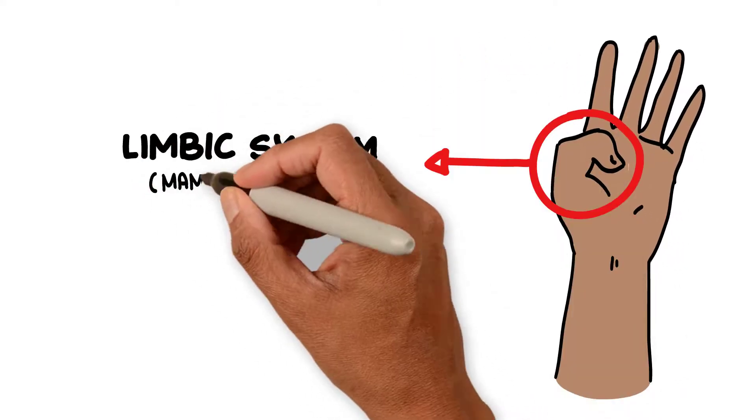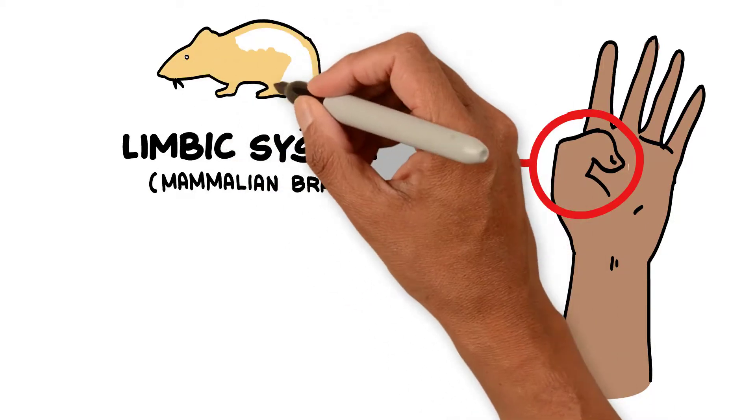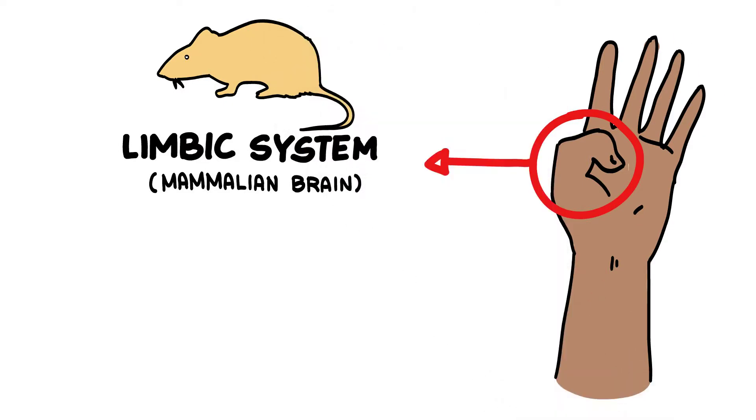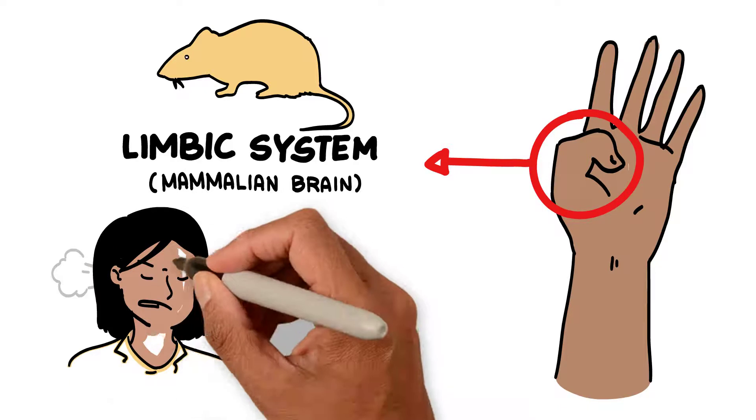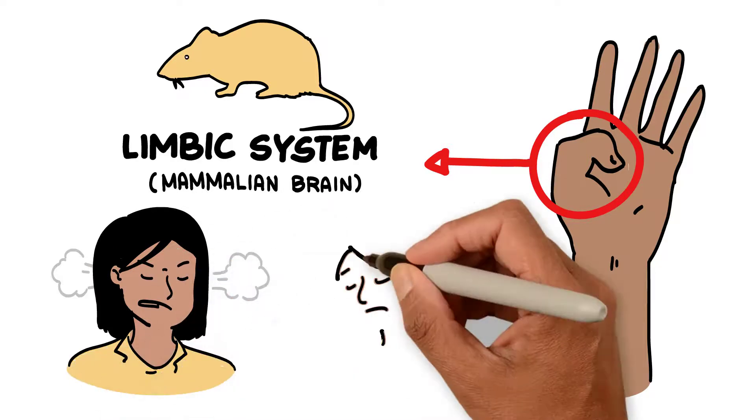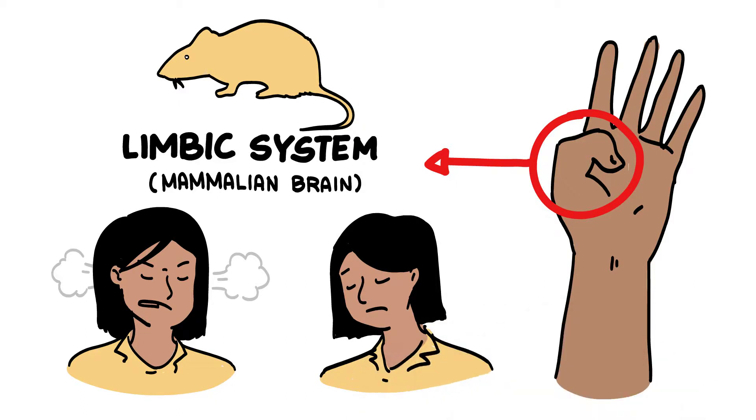The thumb represents the limbic system, which is the mammalian part of your brain. We'll call it the mouse part. This is the emotions or feelings system, and it controls when you're feeling scared or really angry or upset. Sometimes these emotions are so strong, you feel out of control and can't think straight.